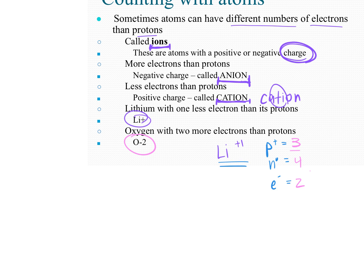For the ion example with a negative-two charge and atomic number 8: protons = 8, electrons = 10 (because a negative-two charge means two more electrons than normal), and neutrons = 16 minus 8 = 8. The neutron count is unaffected by the charge — we still use atomic mass minus atomic number to find neutrons.